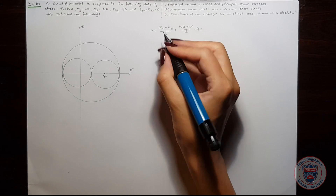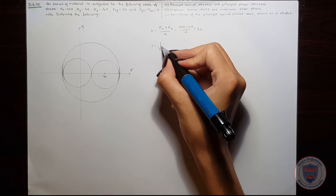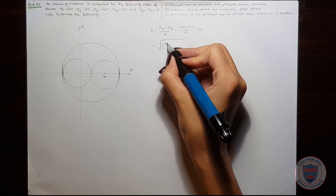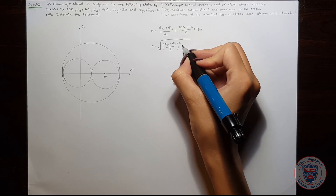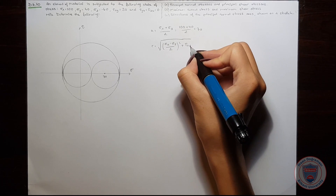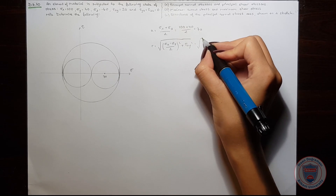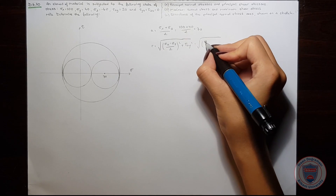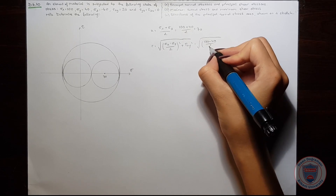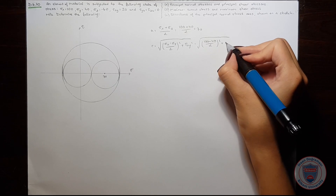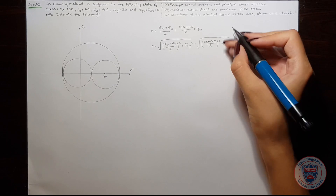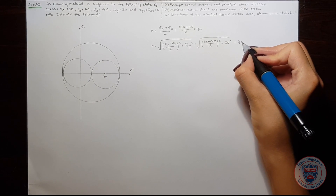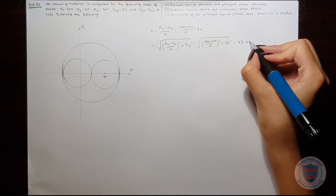Now we can find the radius. The radius will be equal to the square root of the quantity sigma x minus sigma y over 2, squared, plus tau xy squared. That is the square root of the quantity 100 minus 40 over 2 squared, plus 30 squared. We get the radius equal to 42.43.